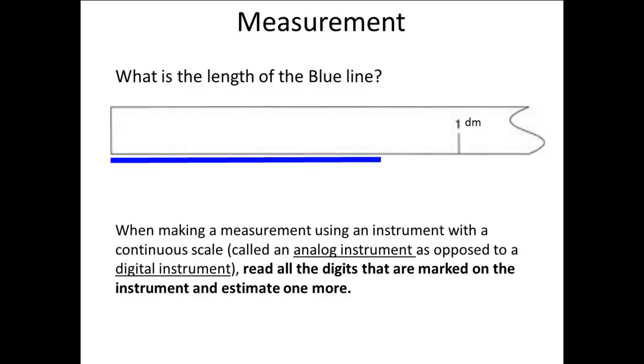When making a measurement using an instrument with a continuous scale, called an analog instrument, as opposed to a digital instrument, read all the digits that are marked on the instrument and estimate one more. So, we can only estimate the length of our line, because there are no digits to read.